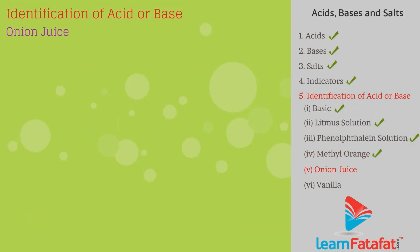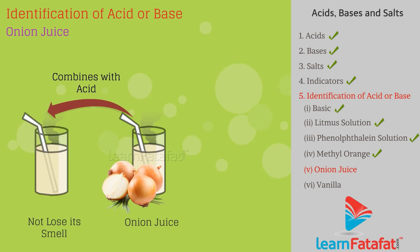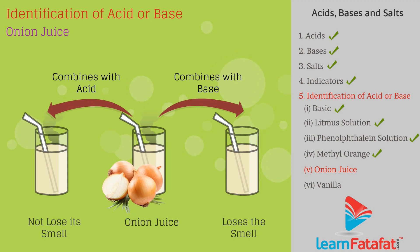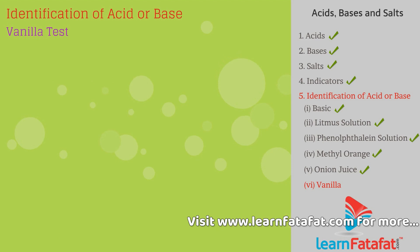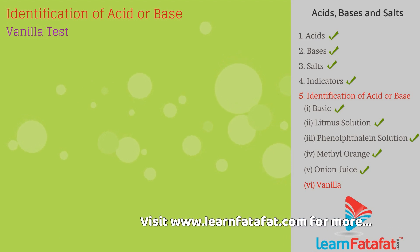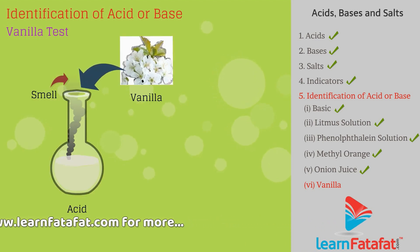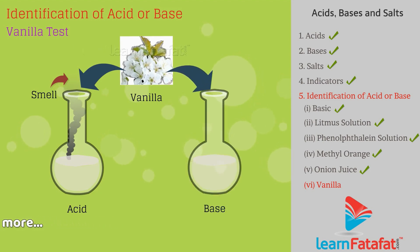Onion juice: In acids, the onion juice does not lose its smell, while in bases it loses the smell. Vanilla: In acids, vanilla does not lose its smell, while in bases it loses the smell.